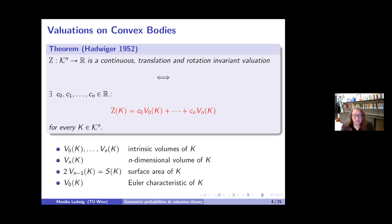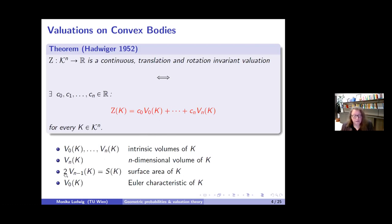V₀ is just the Euler characteristic. V_N is just the N-dimensional volume. If K happens to be I-dimensional, then V_I is the I-dimensional volume of K. In general, these are called intrinsic volumes. In particular, V_{N-1} is proportional to the surface area of K.